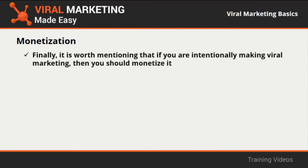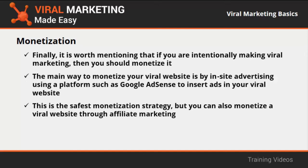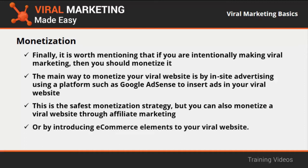The fourth core element is monetization. If you are intentionally running viral marketing, you should monetize it. The main way is through in-site advertising using a platform such as Google AdSense, inserting ads into your viral website so visitors click on targeted ads and earn you money. You can also monetize through affiliate marketing with cost-per-acquisition offers or by introducing e-commerce elements. Stay tuned for the next video on setting up your viral website with WordPress.